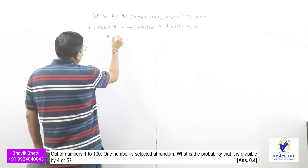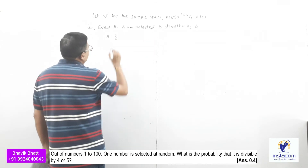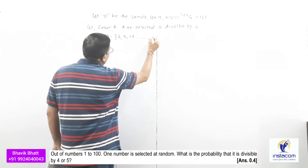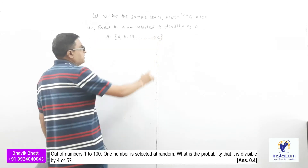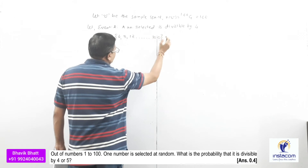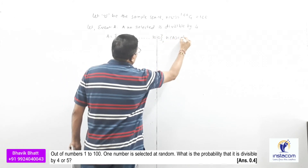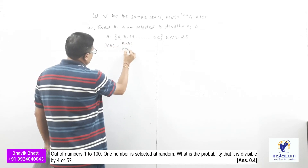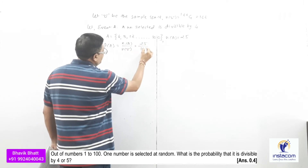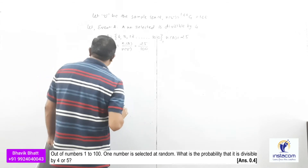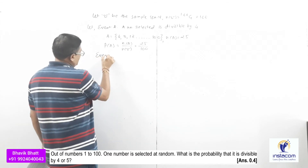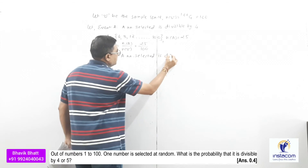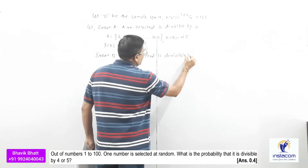In A, the numbers from 1 to 100 divisible by 4 are 4, 8, 12, ... up to 100. Since 100 is divisible by 4, there are 25 such numbers, so N(A) = 25 and P(A) = 25/100. Event B: a number selected is divisible by 5 — the numbers are 5, 10, 15, ... up to 100.